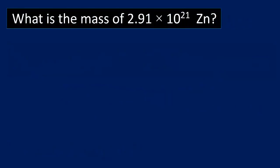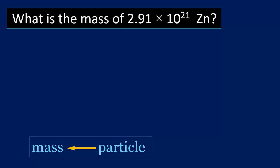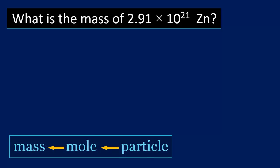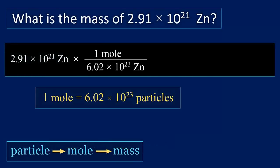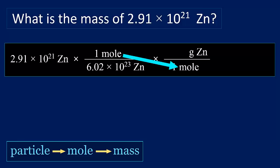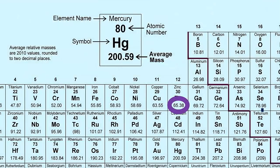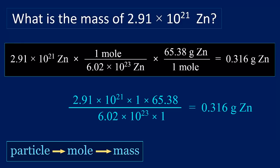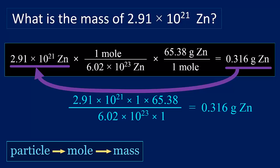Last problem. What is the mass of 2.91 times 10 to the 21 atoms of zinc? Again, stop the video to see if you can work it out yourself. Here we are starting with particles and want to end up with mass. The conversions are from particles to moles to mass. Let's turn that around to make it easier to follow. Write down what's given, multiply by the mole particle relationship to get moles, multiply by the molar mass to get mass of zinc. We use zinc's periodic table mass in the conversion factor, and the calculation gives us 0.316 grams of zinc has 2.91 times 10 to the 21 atoms of zinc.